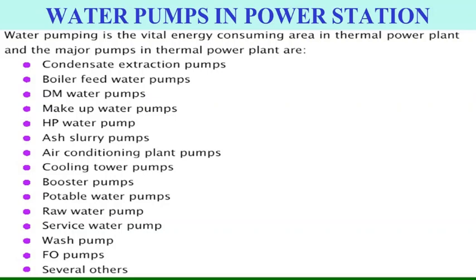In a power station we have several types of pumps — not only water pumps, as slurry and other materials are also handled. These include condensate extraction pumps, boiler feed pump, DM water storage pump, makeup water pump, HP water pumps, ash slurry pumps, air conditioning plant pumps, cooling tower pumps, CW pumps, booster pumps, raw water supply pumps, service water supply, and firefighting arrangement.